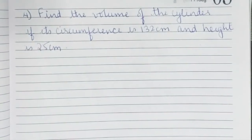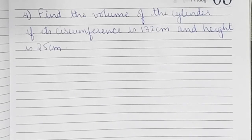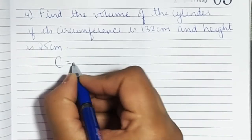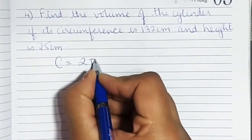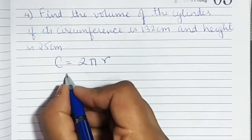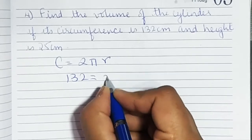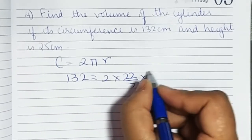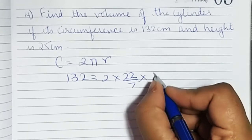The last sum of this exercise: find the volume of the cylinder if its circumference is 132 and height is 25 centimeters. If the circumference is given, we can use the circumference formula to find the radius. Circumference equals 2 pi r, and circumference is 132, so 132 equals 2 into 22 upon 7 into r. We need to find r.